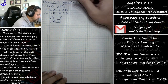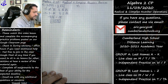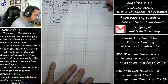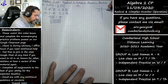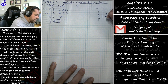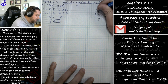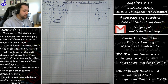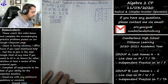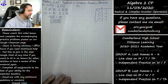Now let's move into powers of i. Remember, it follows a cyclic pattern: i to the first is i, i squared is negative 1, i to the third is negative i, and i to the fourth is 1. Then this pattern just repeats — i to the fifth goes back to i, i to the sixth is negative 1, and so on.